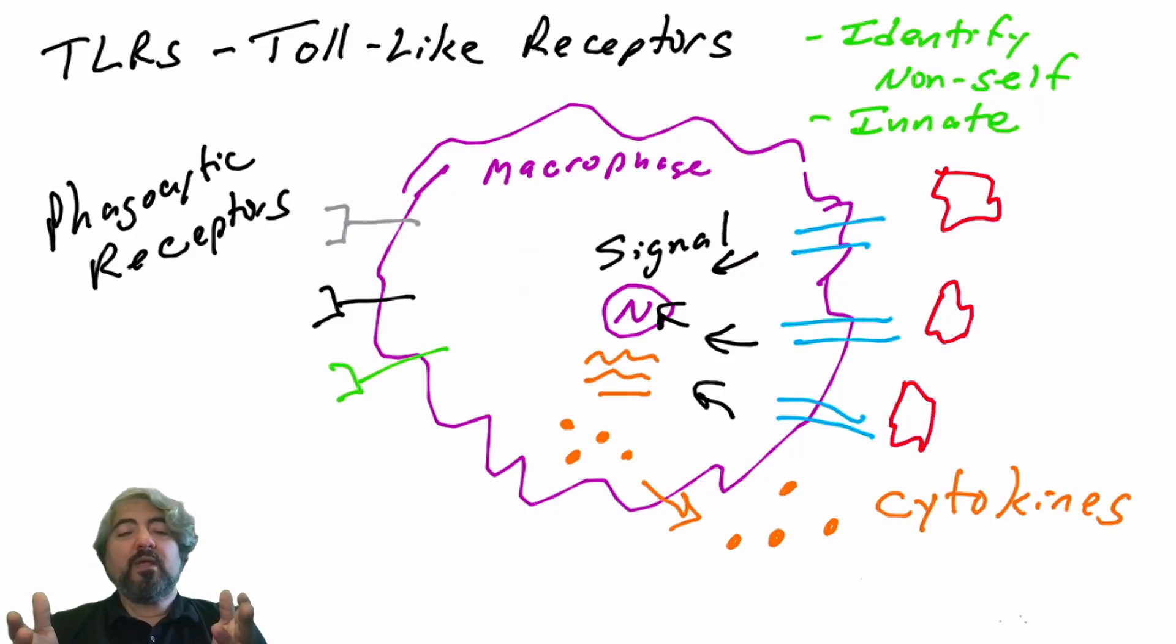If you think about the different themes of immunology we talked about, we talked about communication as one of the themes. Here we have a phagocyte macrophage recognizing an infection using toll-like receptors and communicating this recognition to other cells, organs, and tissues in the body using these cytokine signaling molecules.